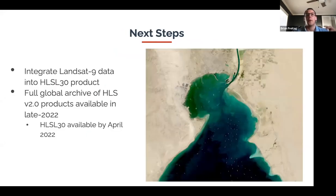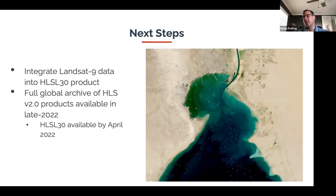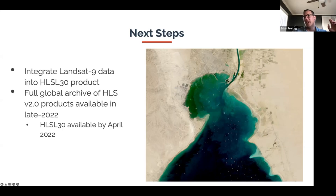Next steps: we're planning to integrate Landsat-9 data into the HLS L30 product in about the April timeframe. Any data from February 10th when Landsat-9 became operational through the integration date will be reprocessed, so Landsat-9 data in HLS L30 will begin February 2022. We'll also have the full HLS archive: L30 expected to finish by April 2022, and S30 expected to finish at the end of 2022. The Suez Canal GIF — showing ships backed up when the Ever Given got stuck — illustrates the full-resolution imagery you can expect from HLS.